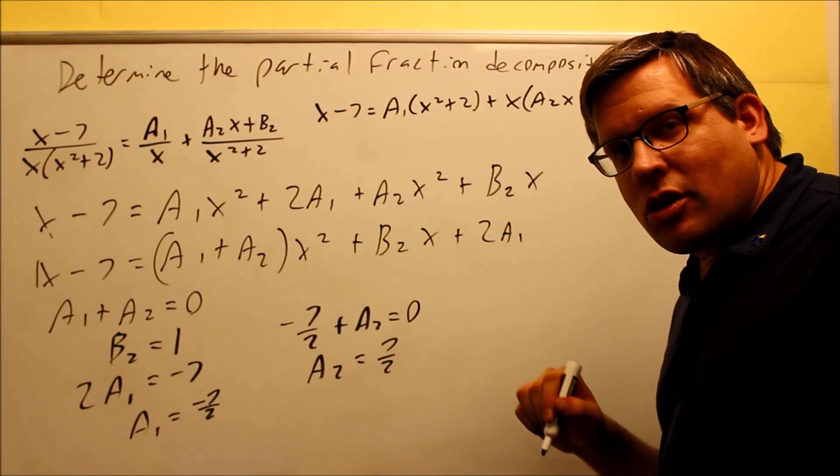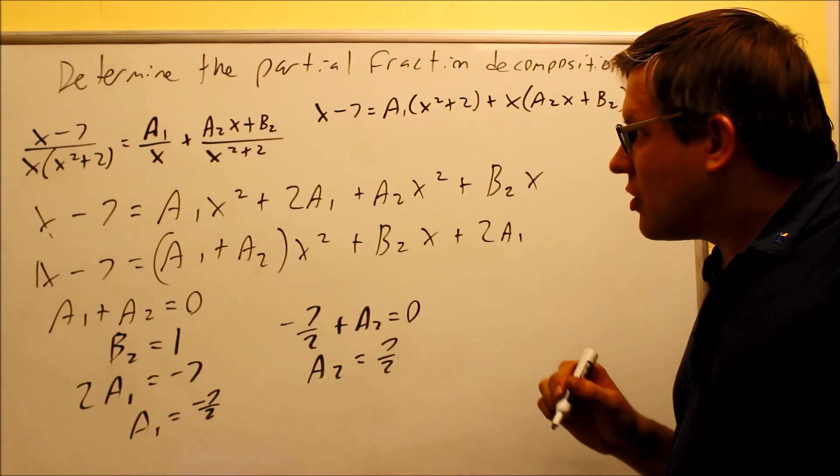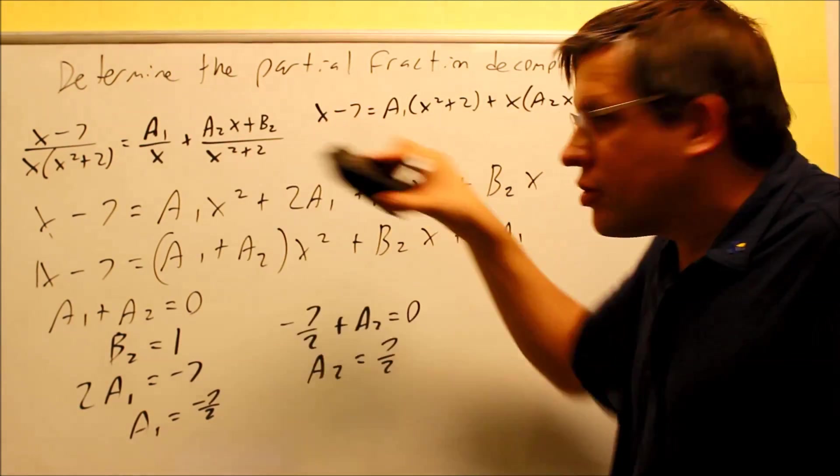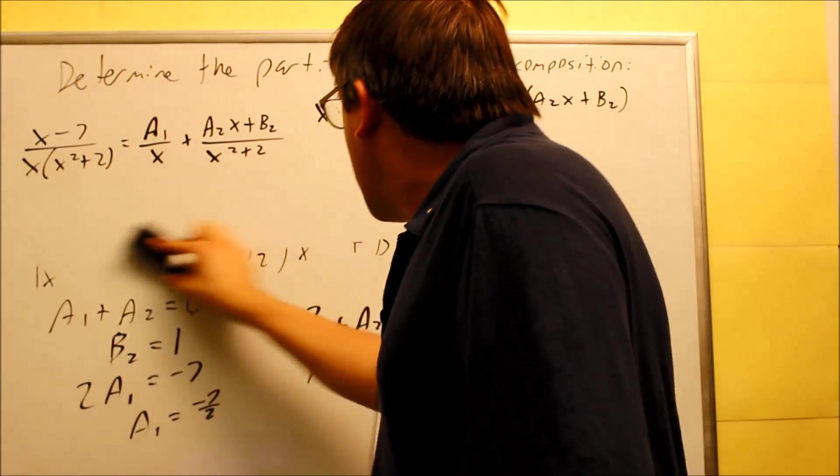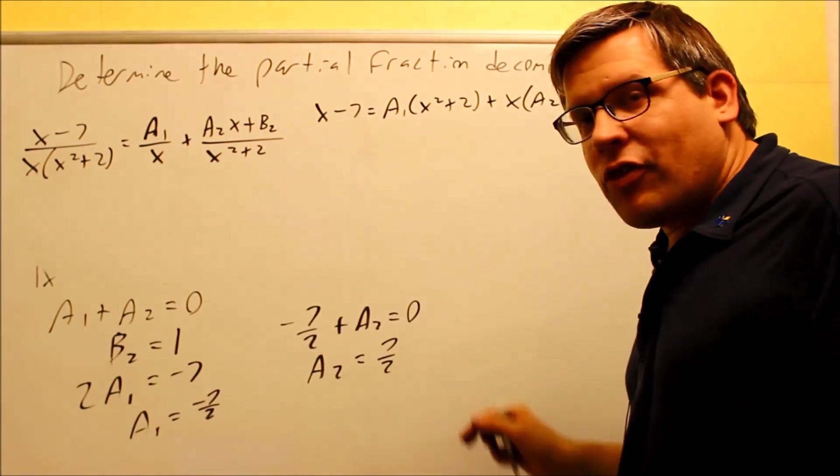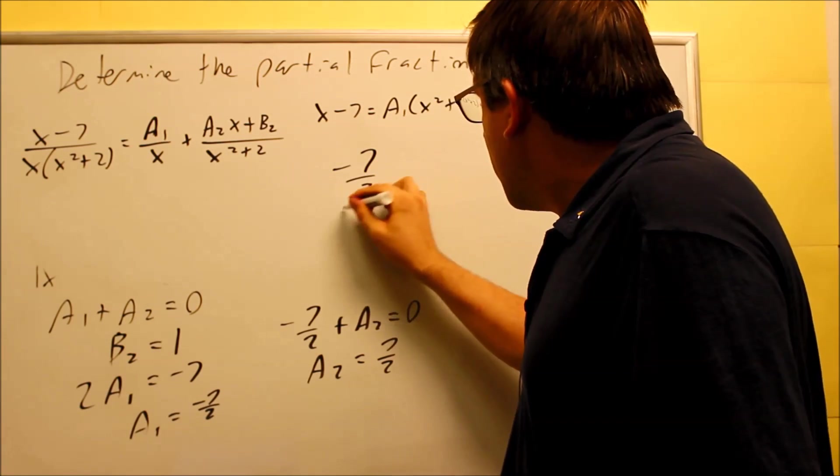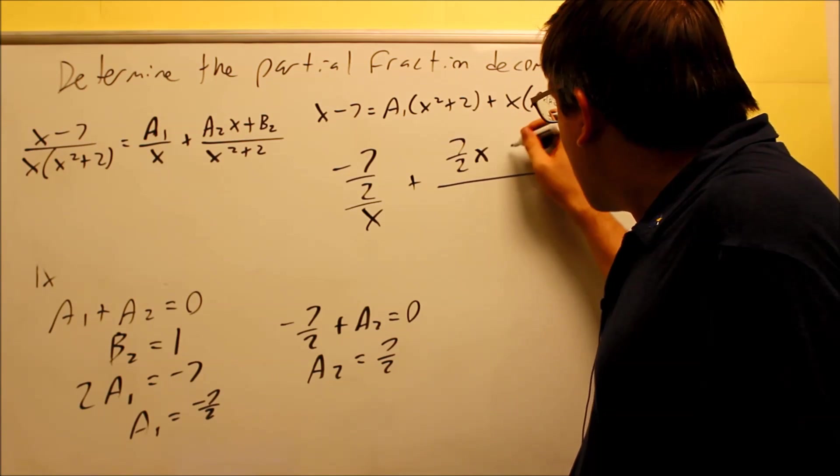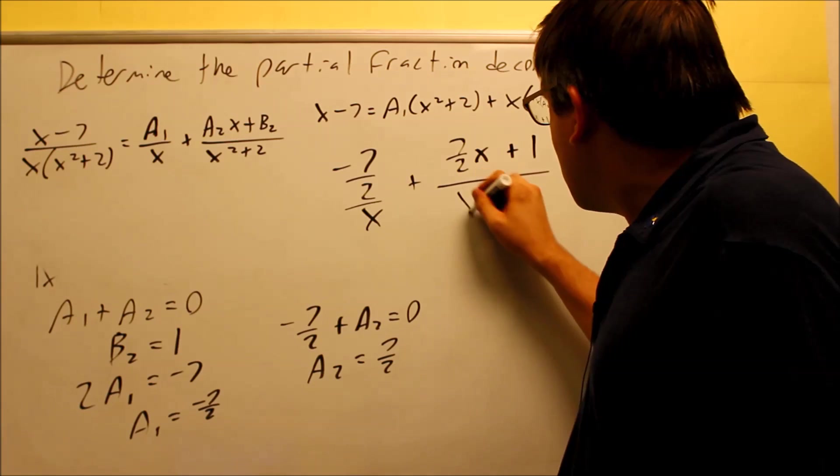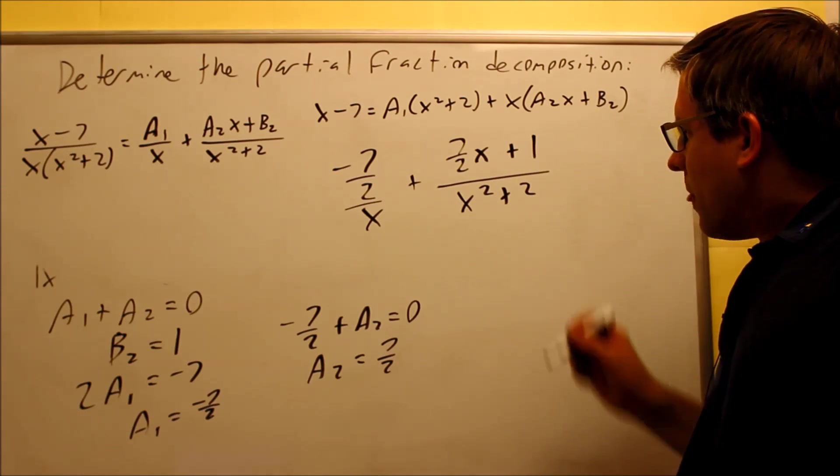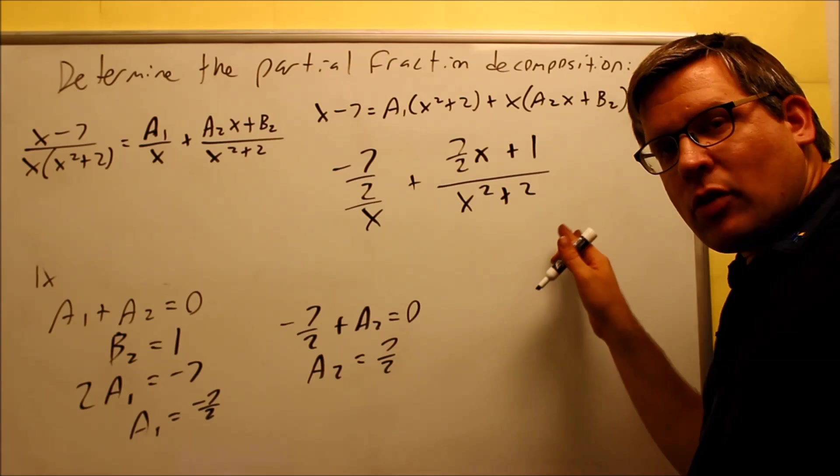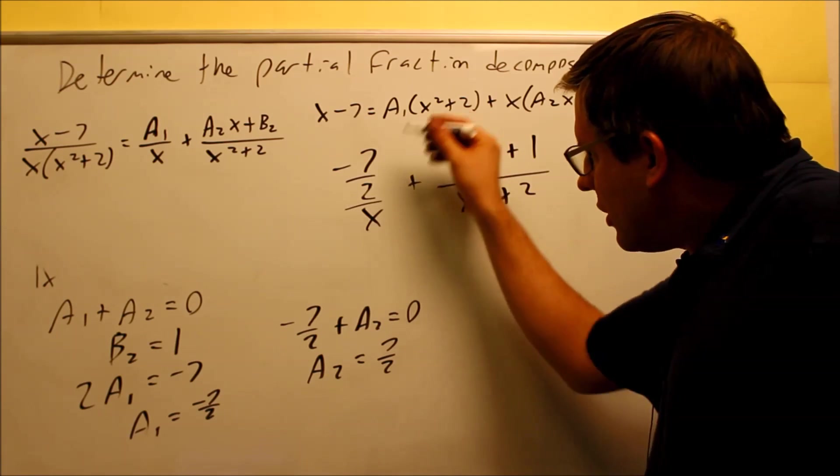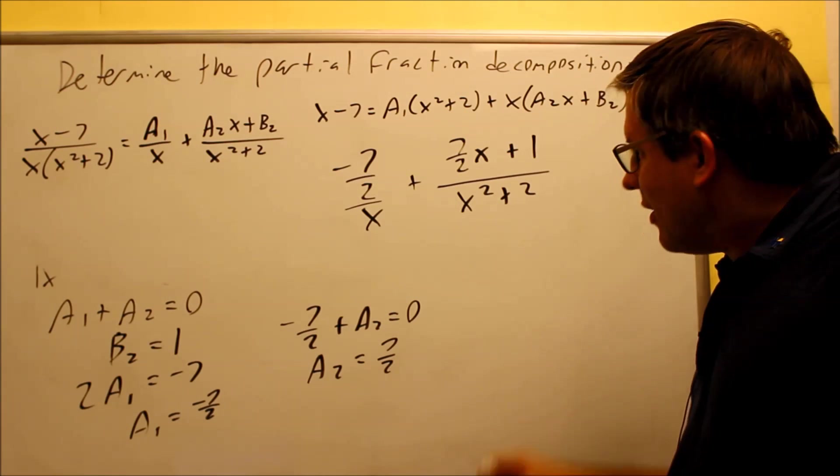So, that was a lot easier and a lot quicker to do by equating coefficients methods. So, now, all we have to do is write our final answer by putting them back into our original fraction here. So, let's go ahead and erase this. And I'll go ahead and write the final answer. A1 is negative 7 halves over x. And then this one is going to be 7 halves x plus b2 is 1. All that's going to be over x squared plus 2. So, depending on your teacher, if they want you to rewrite this, you may need to rewrite it as far as getting rid of those double fractions there.